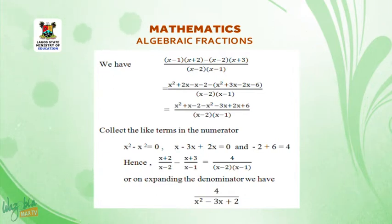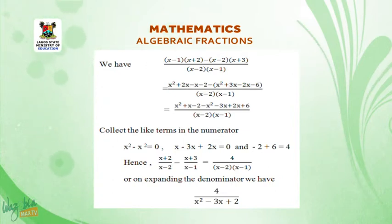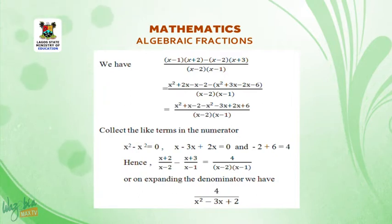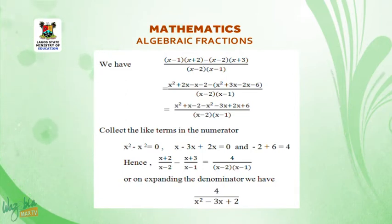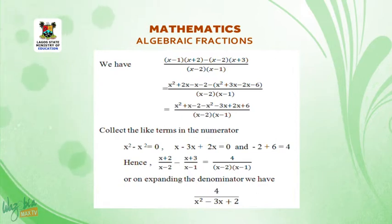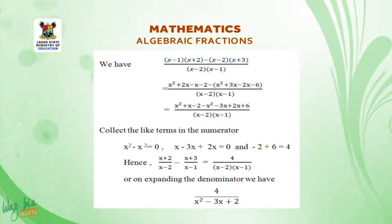This equals x squared plus x minus 2 minus x squared minus 3x plus 2x plus 6, all over (x minus 2)(x minus 1). Collecting like terms in the numerator: x squared minus x squared equals 0; x minus 3x plus 2x equals 0; and minus 2 plus 6 equals 4.